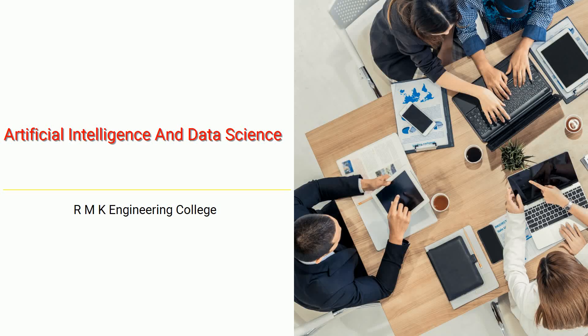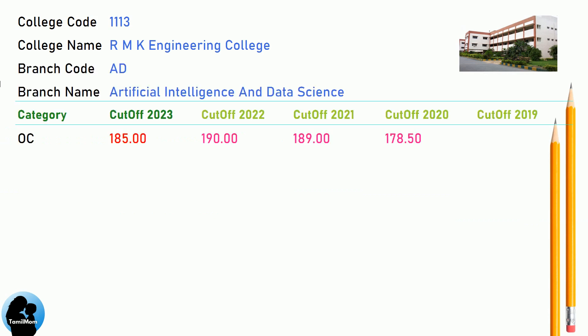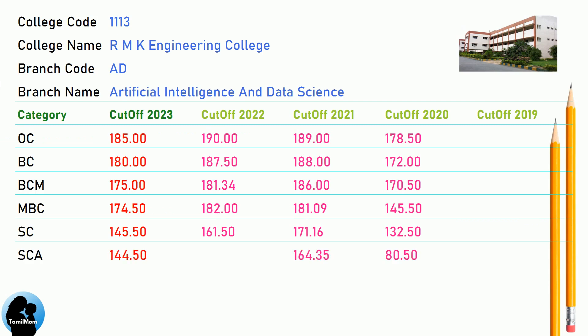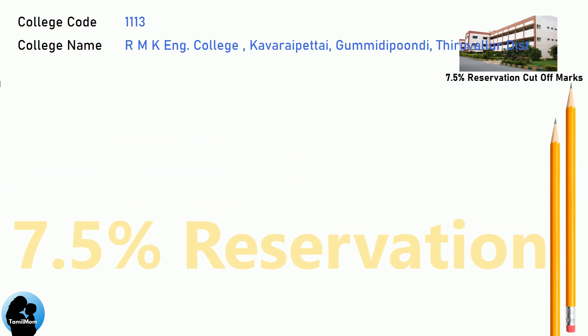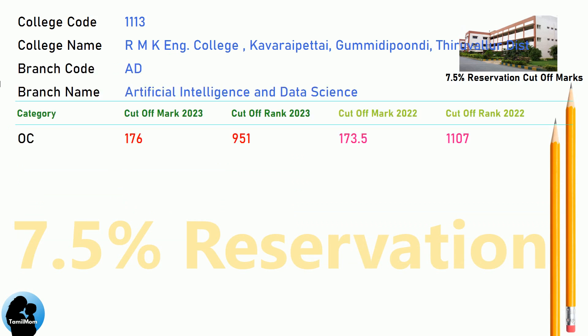DNA Cut-Off for RNK Engineering College in Artificial Intelligence and Data Science. DNA 7.5 Reservation Cut-Off for RNK Engineering College in Artificial Intelligence and Data Science.